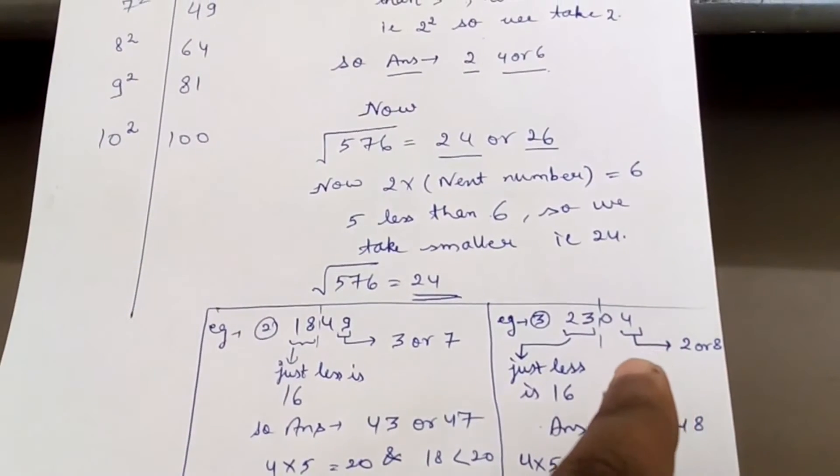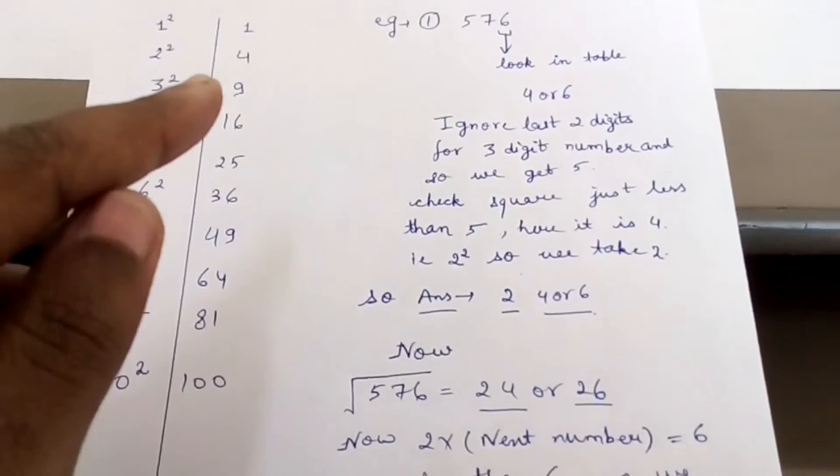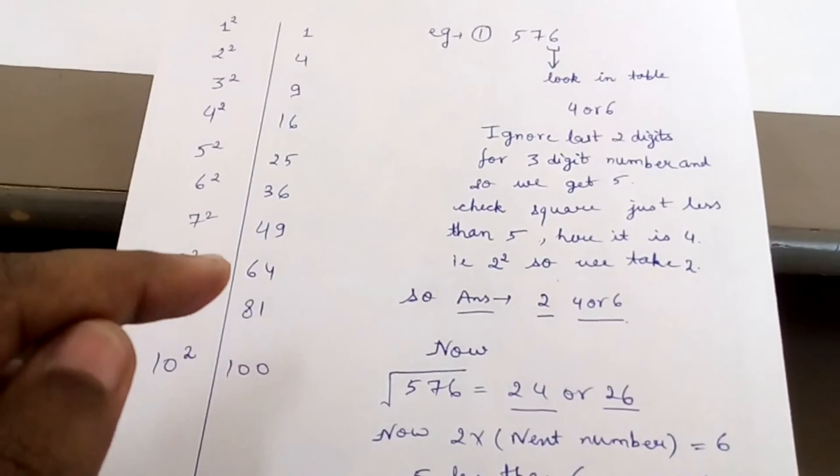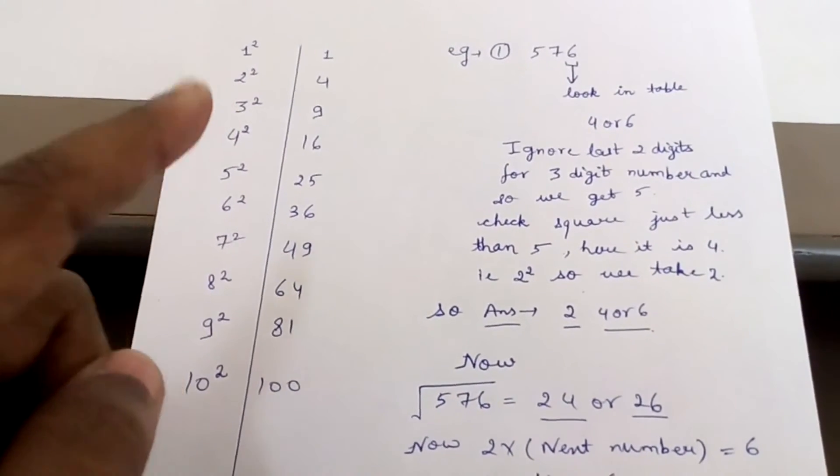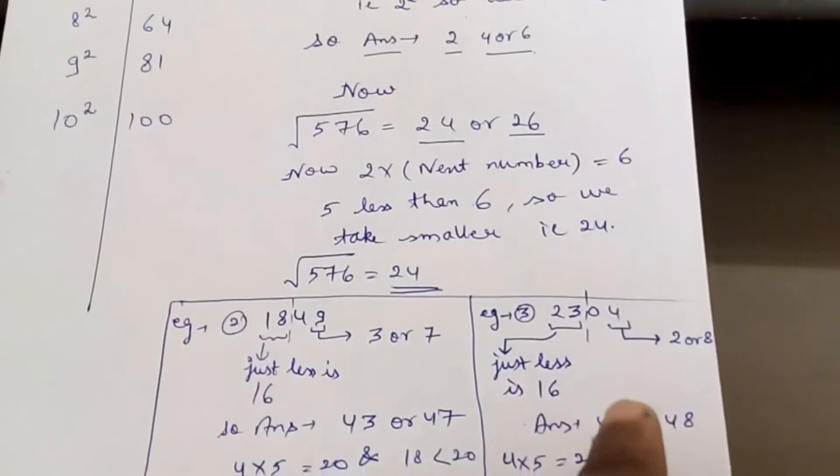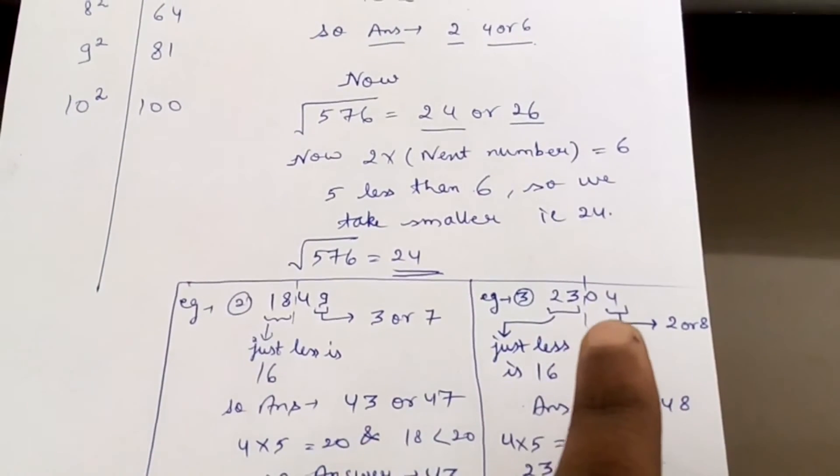You keep aside 2 or 8. Now eliminate 2 digits, that is you get 23. Now just below 23 you will get 16, so you take answer as 4.